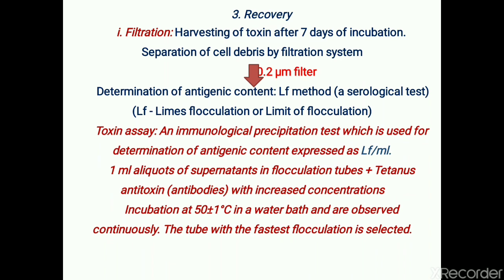In this test, 1 ml aliquot of supernatant of the toxin is taken in a flocculation tube and mixed with standard tetanus antitoxin antibodies using variable concentrations of antibodies with a fixed concentration of the test toxin sample. After incubation at 50°C in a water bath, all tubes are observed continuously for the presence of flocculation. The tube with the fastest flocculation is the indicator tube, and the concentration of toxin in that tube is equivalent to the concentration of that antibody.